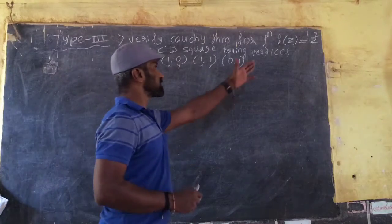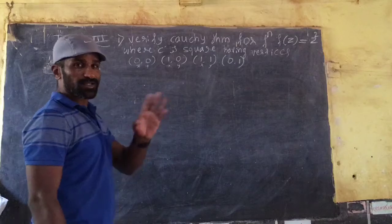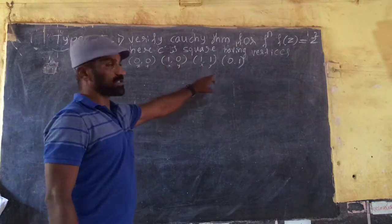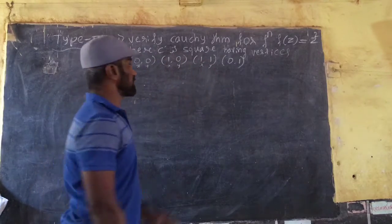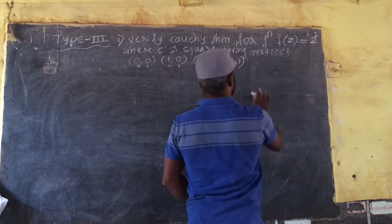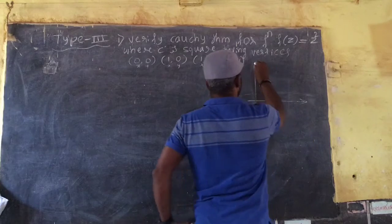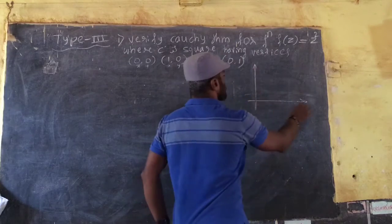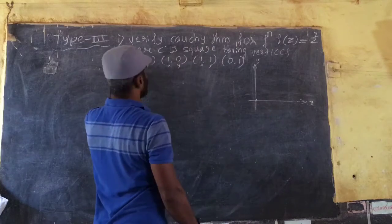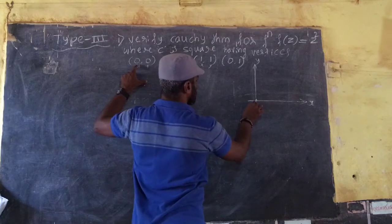For the function f(z) = z². Where C is a square — it is not a circle. C is a square having these vertices. I can draw the axes. So, it is the x-axis and y-axis.